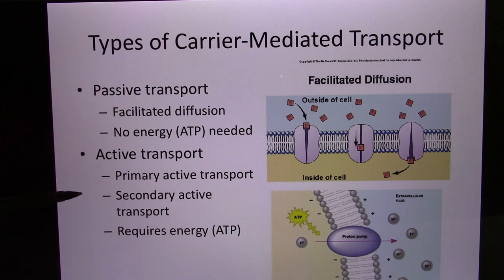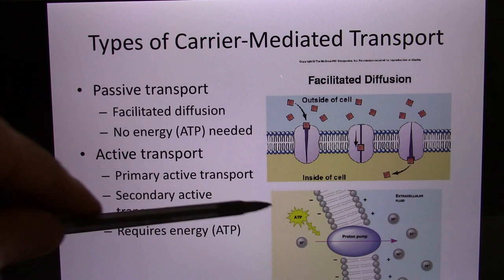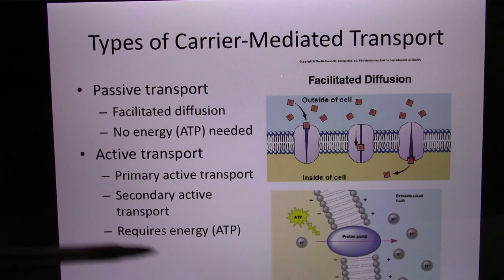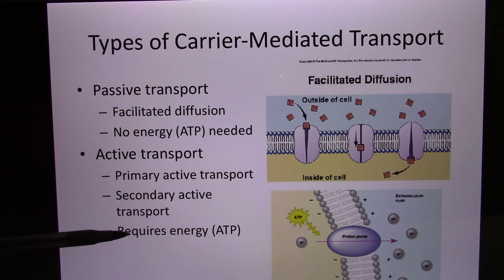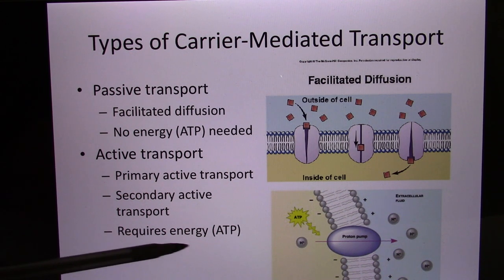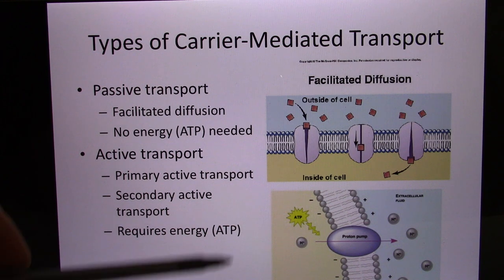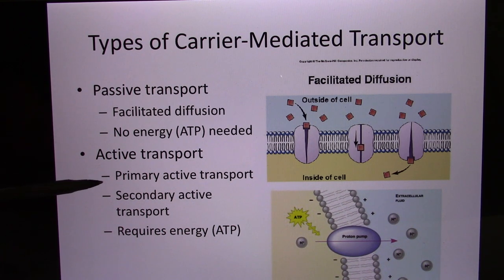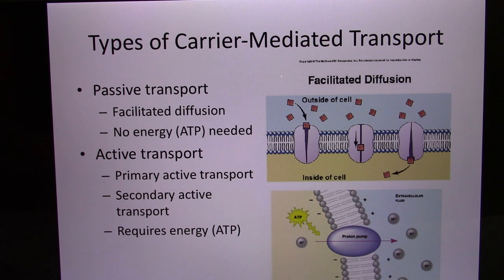Active transport moves the molecule from low concentration to the high concentration area. This won't naturally happen, so you need to give energy — the biological energy is ATP. The difference between the two: passive transport uses the concentration gradient as the energy source, while active transport uses ATP as the energy source.